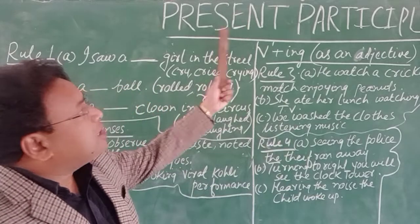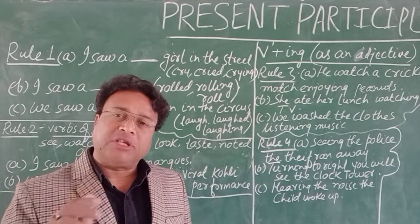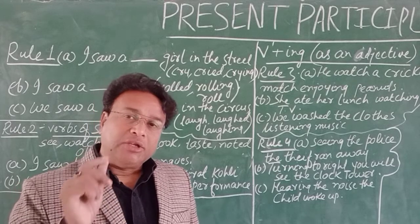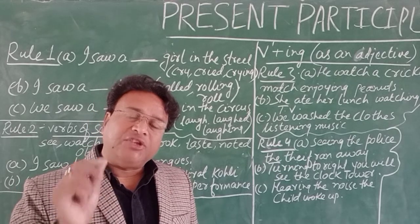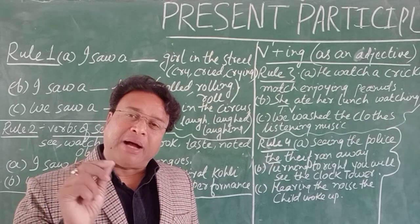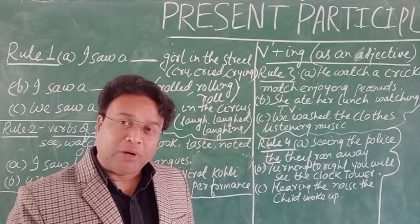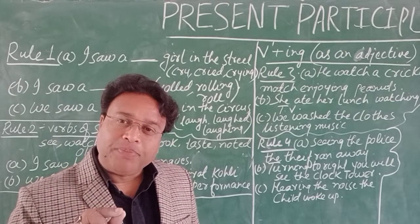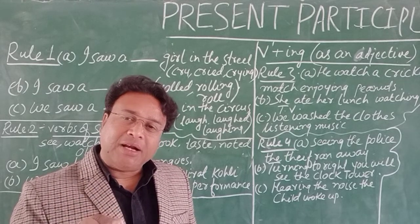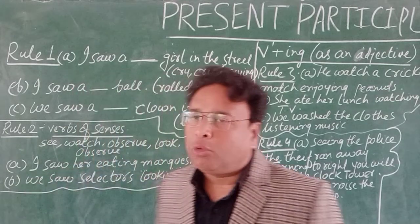تو here we go۔ Present participle — participle ہوتا کیا ہے؟ جب ہم کسی verb کو adjective کی طرح استعمال کرتے ہیں، تو وہ verb، verb نہ رہ کر participle بن جاتا ہے۔ Verb کی first form کے ساتھ جب ہم ing لگا دیتے ہیں تو وہ present participle بن جاتا ہے، اور وہ adjective کا کام کرتا ہے۔